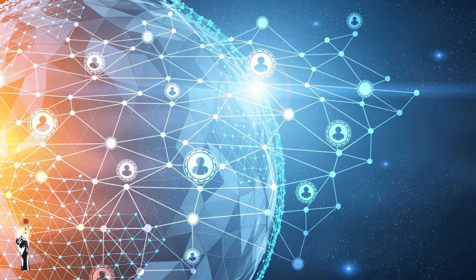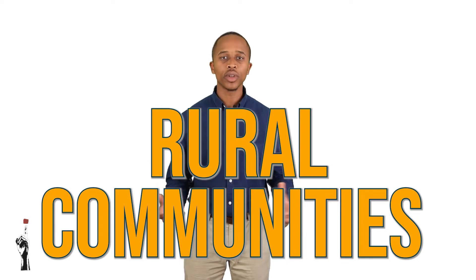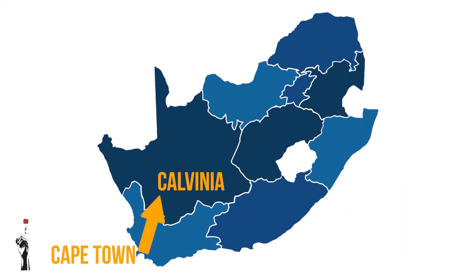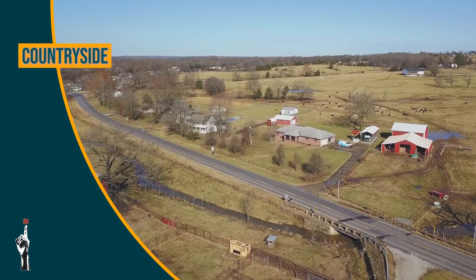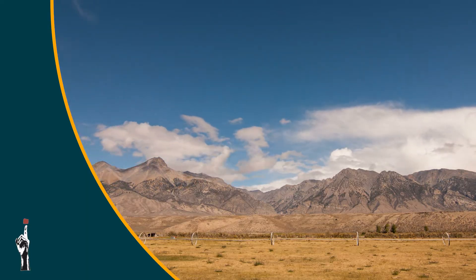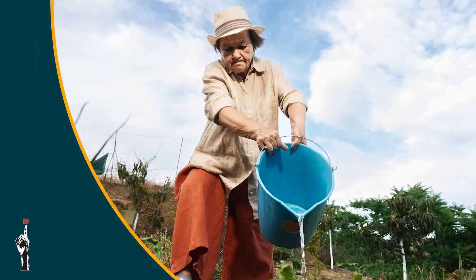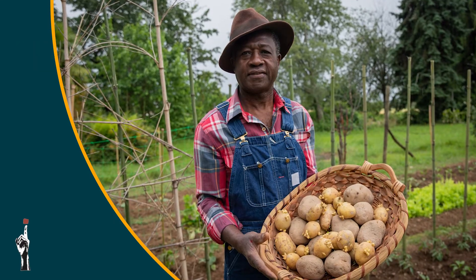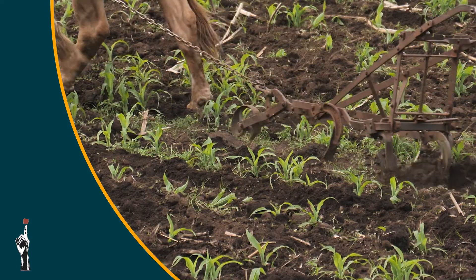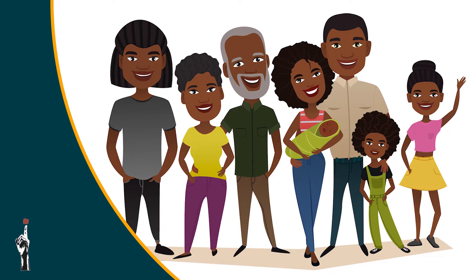We call this concept globalization — we can communicate much more easily today with people all over the world. Rural communities are found in the countryside, away from cities and large towns. Due to urbanization, there are fewer job opportunities in the countryside, and people there are more dependent on subsistence farming to be self-sufficient. In rural communities, extended families are very important, especially for survival, and people are more attuned to each other.